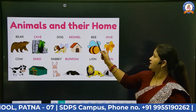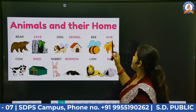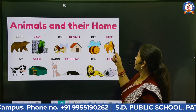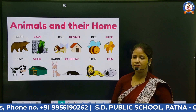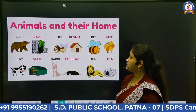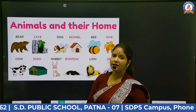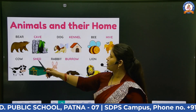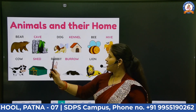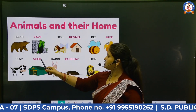Third one is bee. Where does bee live? Bee lives in hive. We can say hive — H-I-V-E. Next is cow, C-O-W. Where does cow live? Cow lives in shed — S-H-E-D.